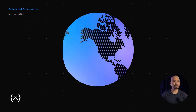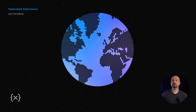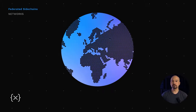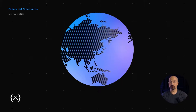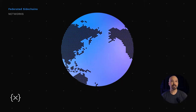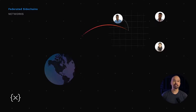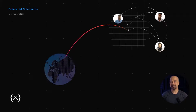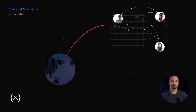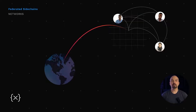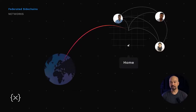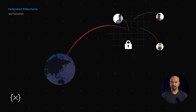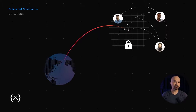Think of it this way. Say the XRP Ledger is like the internet, a global network that anyone can use to transfer data around the world. A sidechain is like a personal or business network that allows people to have the capabilities they need and provide more control. For example, a sidechain can operate like a private home network, meaning the owner decides who can access it and which devices run on it.